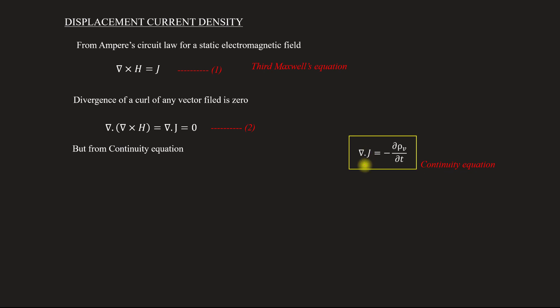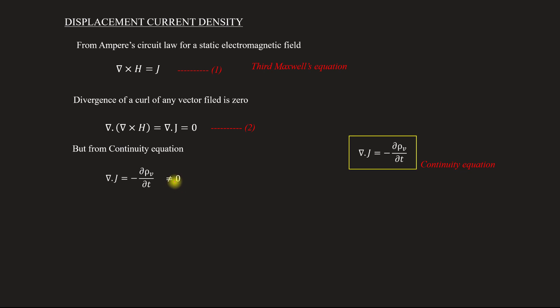Now, from the divergence of curl property, del dot J is equal to zero. But the continuity equation says del dot J is not equal to zero in general. So this is a conflict — a fundamental conflict that we have to resolve.